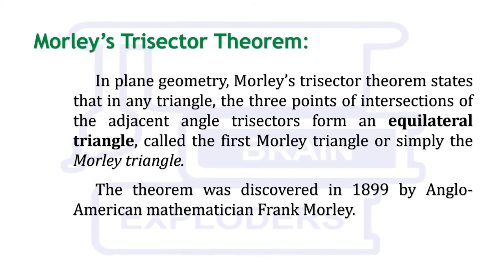This theorem states that in any triangle, the three points of intersections of the adjacent angle trisectors form an equilateral triangle called first Morley triangle or simply the Morley triangle. The theorem was discovered in 1899 by Anglo-American mathematician Frank Morley.